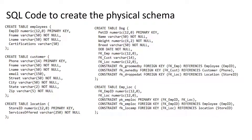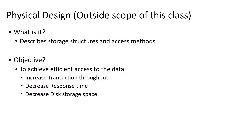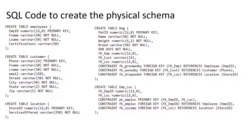It will wind up looking something like this: we create our employees table with these attributes of these data types, with specific constraints — this has to be unique, these have to be present, they can't be null. Don't get freaked out by this just yet — this is what we'll be writing in a couple of weeks and it will all make a lot of sense. Going one level past this physical schema is the physical design of the database itself, which is outside the scope of this class — that's where we look at hashing, indexing, and techniques for distributing data across the file system. Where we're stopping in this class is really at writing the SQL code.